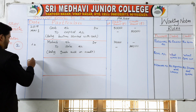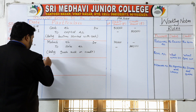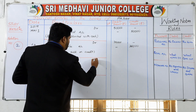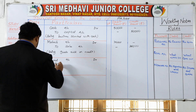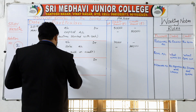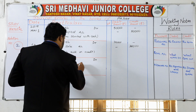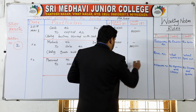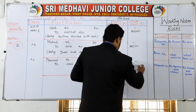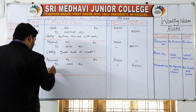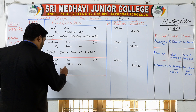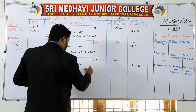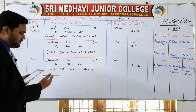Date 4th: Pramodh account debit, to cash account. The amount is 6,000 rupees as given in the question. 6,000 — being cash paid to Pramodh. This is how you have to write the narration.